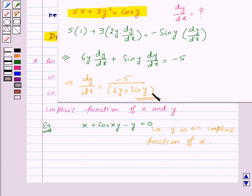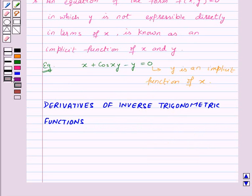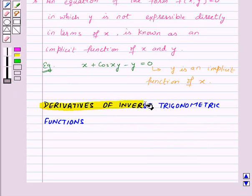I hope from this example it must be clear to you how we differentiate implicit functions. So let's move on to our next topic: derivatives of inverse trigonometric functions.